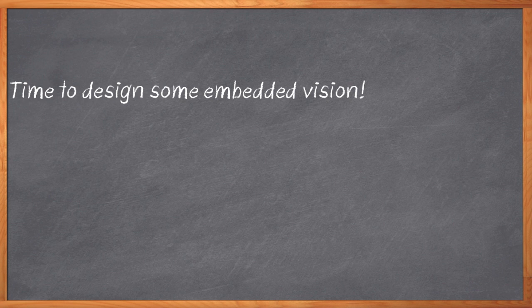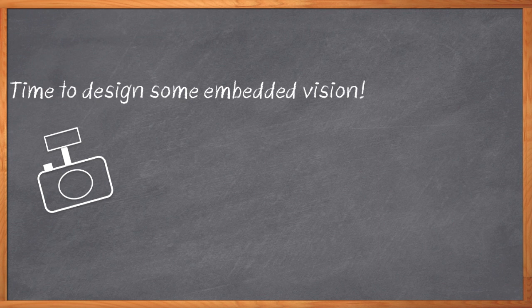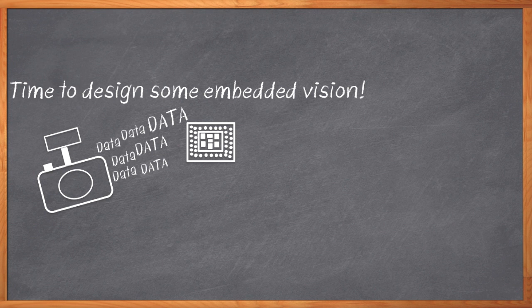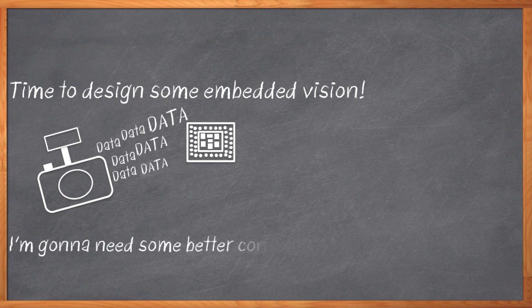I am ready to design myself some embedded vision. That's right, it's going to be super cool — my machine will be able to see. I've got my awesome high-resolution camera and my super-fast video-optimized processor. The camera puts out a whole bunch of data and, of course, my processor is ready to filter and enhance and detect. The data comes gushing into my processor from the camera in this huge pipe — I've got a lot of data to move around here, and I'm going to need some pretty impressive connectors and standards or my fancy processor won't have anything to chew on.